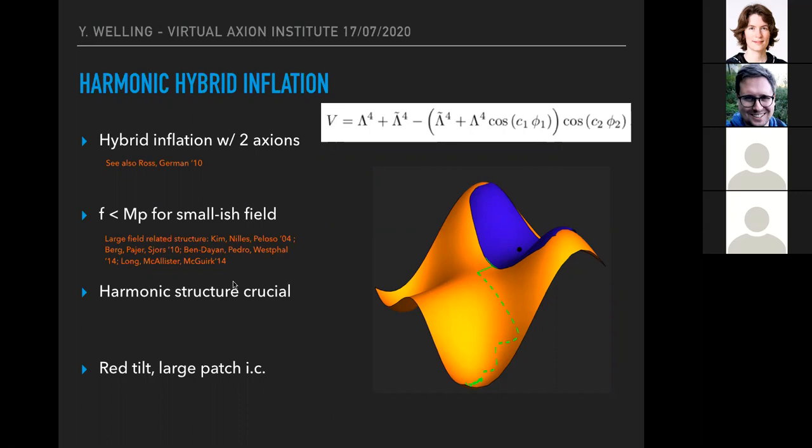And some of the nice features of this model is that in this particular setup, it generically produces a red tilt. This is as opposed to the simple original hybrid model I showed in the previous slide, which generically actually predicts a blue tilt. And moreover, you can find the boundaries of the field space where we have at least 60 e-folds of inflation. So everything within this blue patch will generate sufficient inflation. And it's quite a sizable region compared to the fundamental domain of this potential. So there's not much fine tuning of the homogeneous initial conditions, which is also nice.